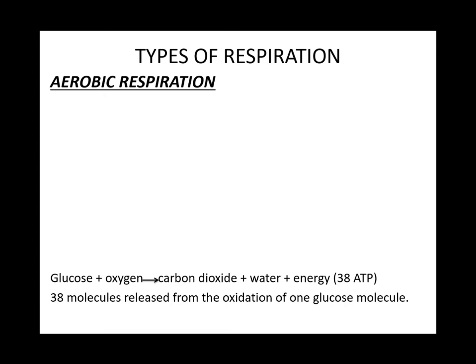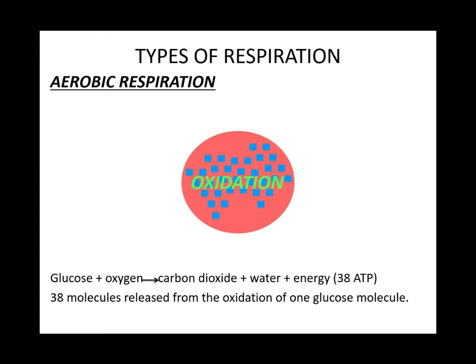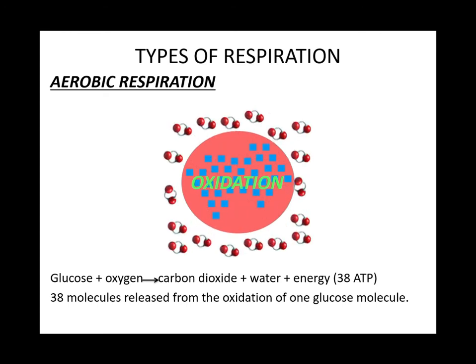We have two types of respiration: aerobic respiration and anaerobic respiration. Aerobic respiration is an oxidation process that takes place in the presence of oxygen. The equation is: glucose plus oxygen gives carbon dioxide plus water plus energy. That is 38 ATP molecules released from the oxidation of one glucose molecule.